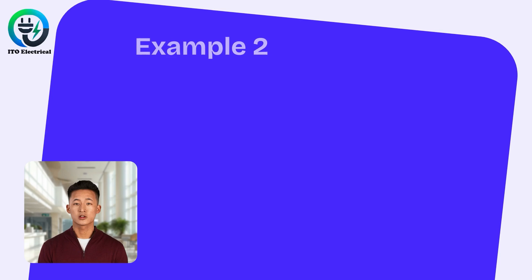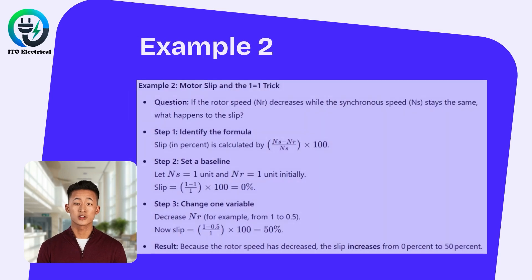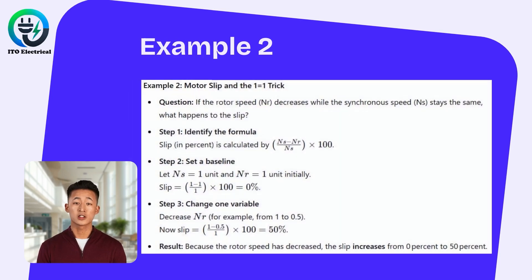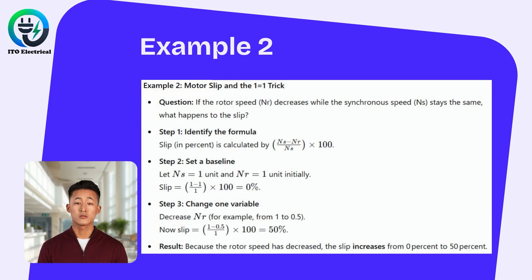Example 2. Question: if the rotor speed decreases while the synchronous speed stays the same, what happens to the slip? Follow the steps using the one is equal to one trick to find the answer easily.